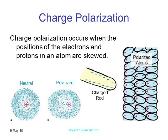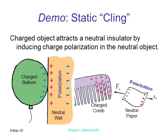Polarization is when electrons and protons are both present but the electrons sit on one side — the atom is still ultimately neutral but has a negative side and a positive side. Charged objects can attract a neutral insulator by inducing this kind of charge — polarization in that neutral object. You can take a balloon, rub it on your hair, and hold it close to a wall; it causes polarization in the wall and sticks.